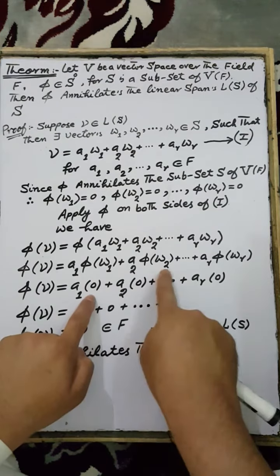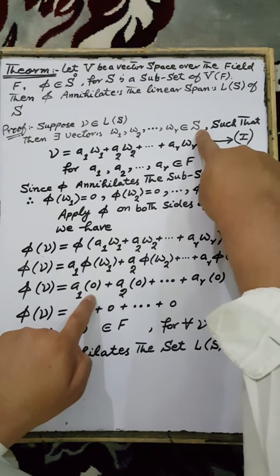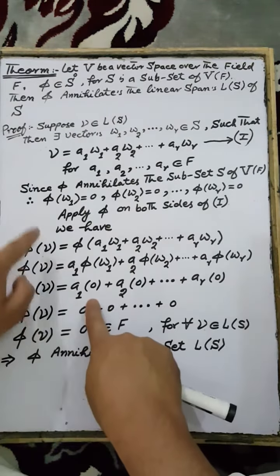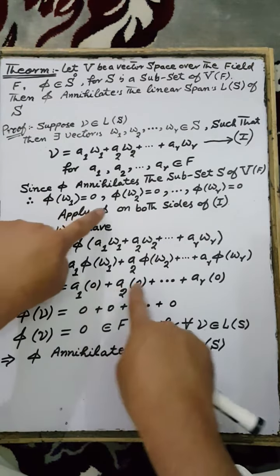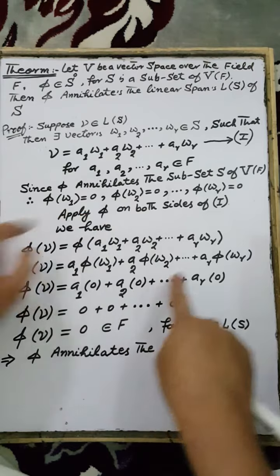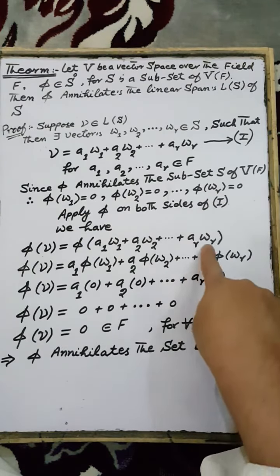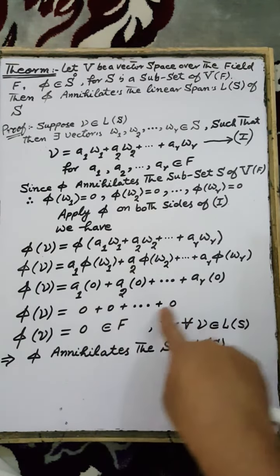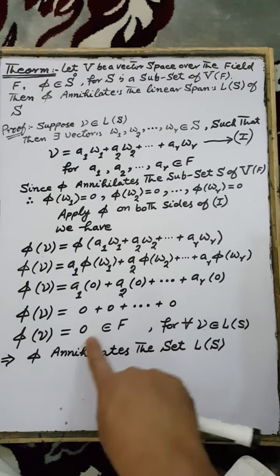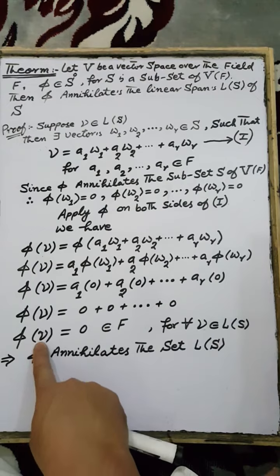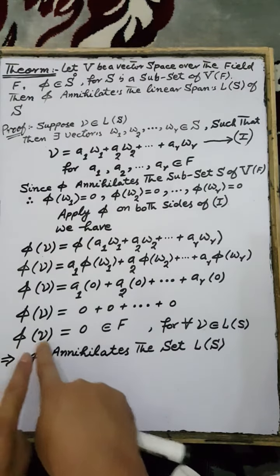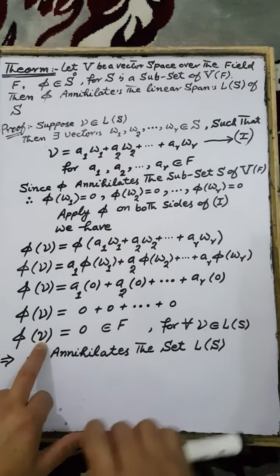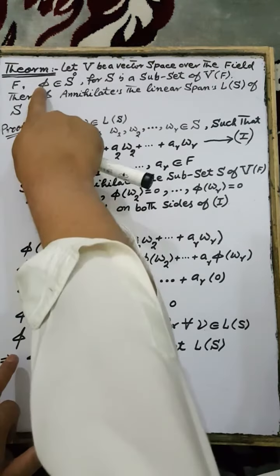Since W1, W2, up to WR are elements of the set S and Phi is the annihilator of the set S according to the hypothesis, the images of W1, W2, and WR under Phi are each equal to 0. Therefore, each scalar multiplied by 0 is 0, giving 0 + 0 + ... + 0 = 0. That is, the image of V, which is an element of the linear spanning set spanned by S, under the linear functional Phi is equal to 0.